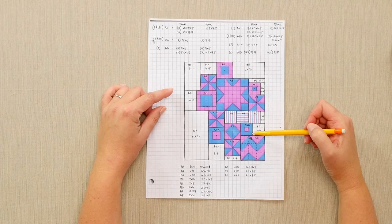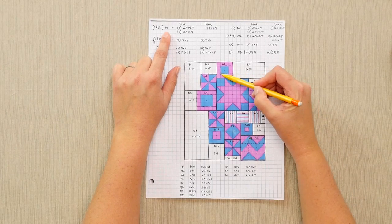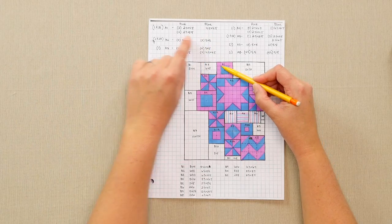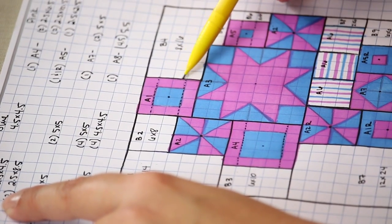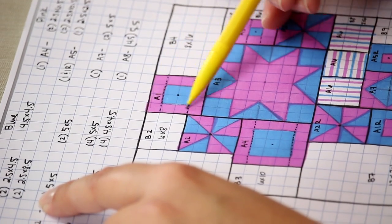I've also done the same with each one of my blocks. For block A1, it's made out of a blue four and a half by four and a half cut piece. And two, two and a half by four and a half, and two and a half by eight and a half inch pieces.